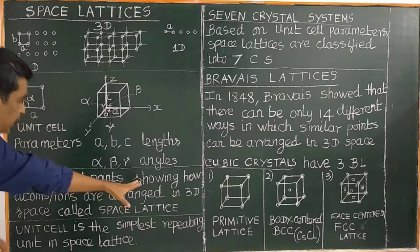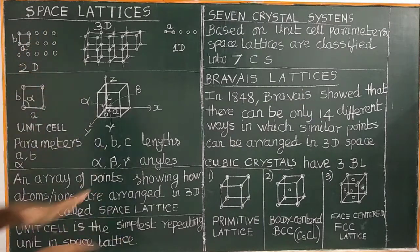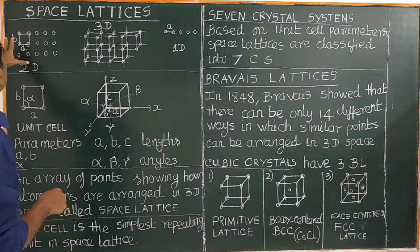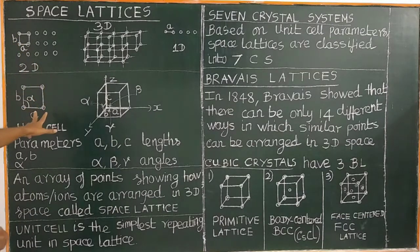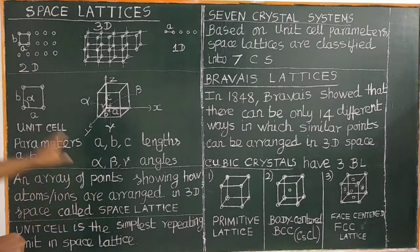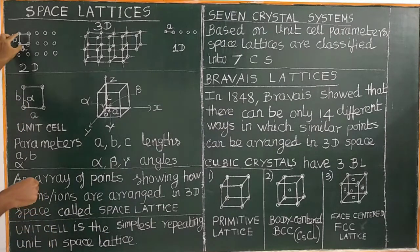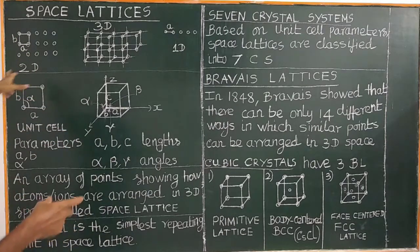Let us consider a two-dimensional space lattice — an array of points showing how the atoms, ions, or molecules are arranged in two-dimensional space. This is the unit cell of the two-dimensional space lattice. Unit cell is the simplest or smallest repeating unit in a space lattice, whether in two dimensions or three dimensions.